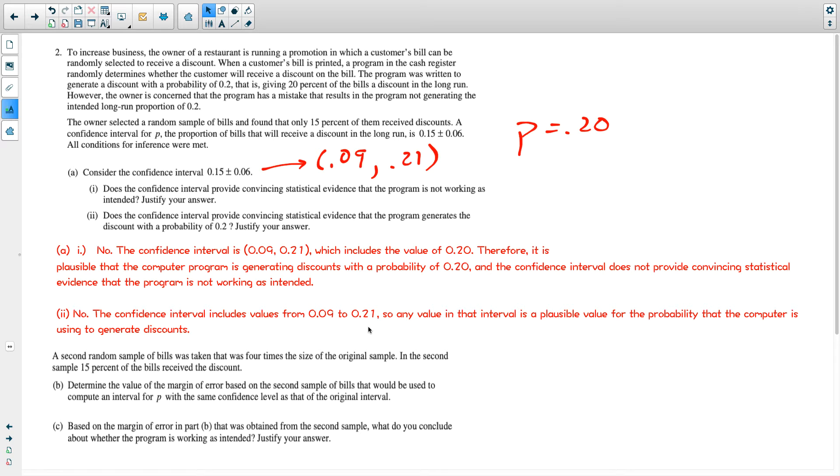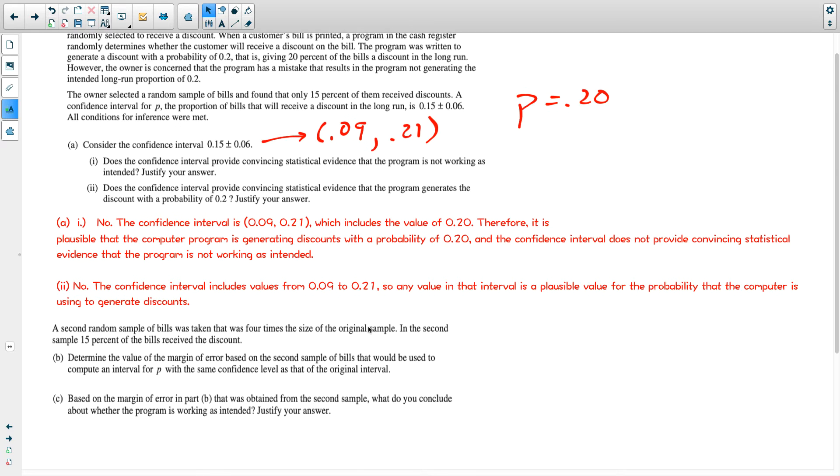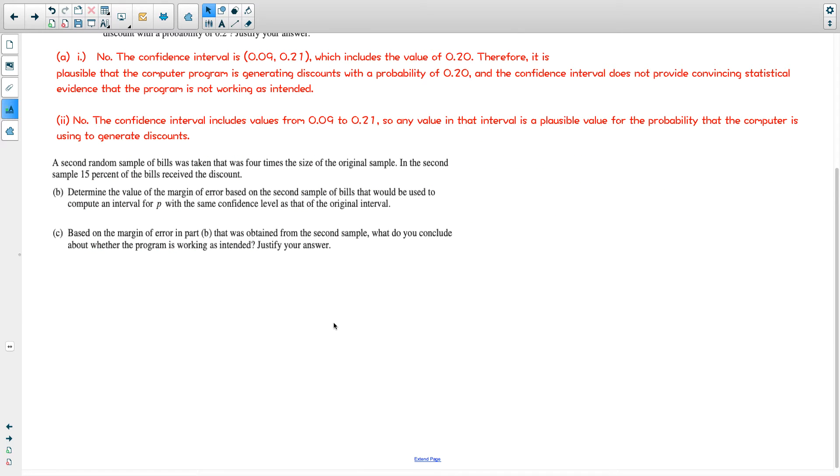Now let's get down to part B here. A second random sample of bills was taken that was four times the size of the original sample. In the second sample, 15% of bills received a discount. It's the same value, but the difference is the sample size was four times larger.